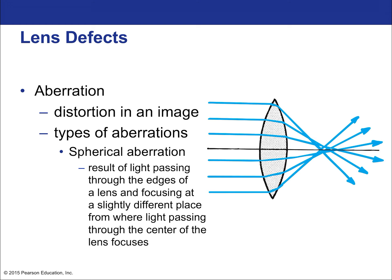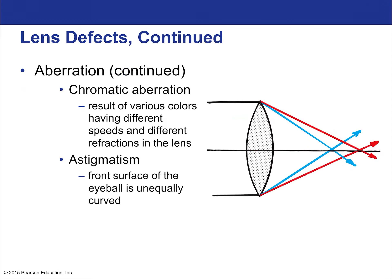Lenses operate by refraction, not reflection. Lens defects exist because real lenses don't focus perfectly to a single point — this is called aberration. Additionally, any lens material has some dispersion, so different wavelengths focus at slightly different points, causing chromatic aberration. In summary, ray optics is fundamentally about reflection and refraction — the geometry of light traveling in straight lines and bending at interfaces.